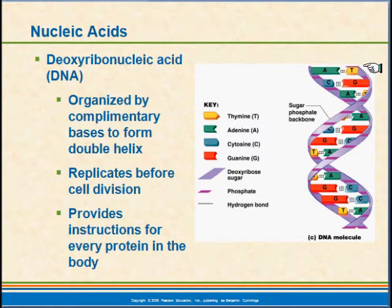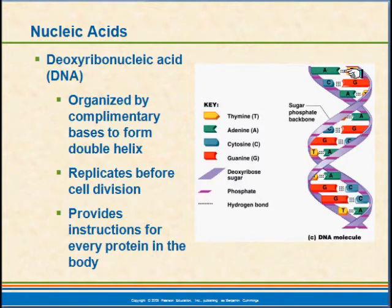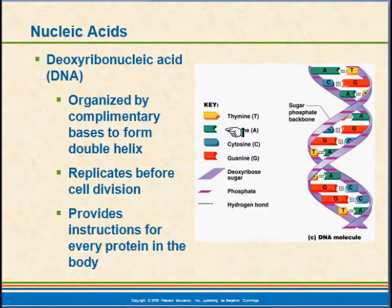These nucleotide bases have what we call complementary base pairing. That is, if I have a strand of DNA on one side and I have adenine, for instance, as we see right here, it will always pair up with thymine on the other side. DNA is in this twisted ladder configuration, which allows us to duplicate the DNA very easily. All we have to do is untwist that ladder and get our separate halves.